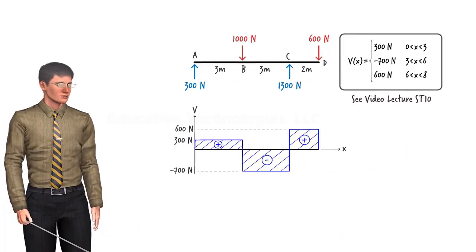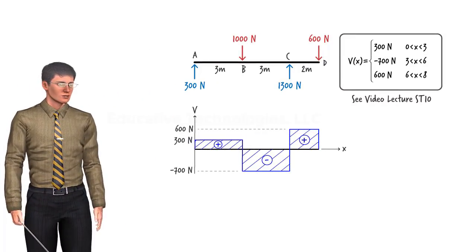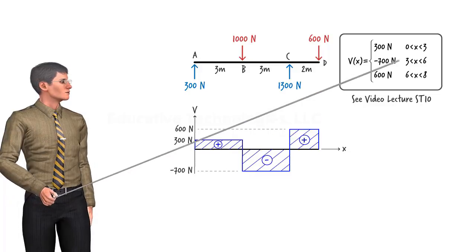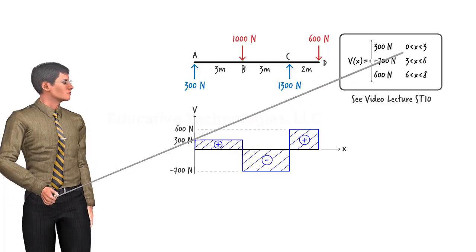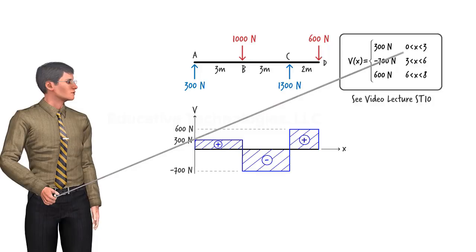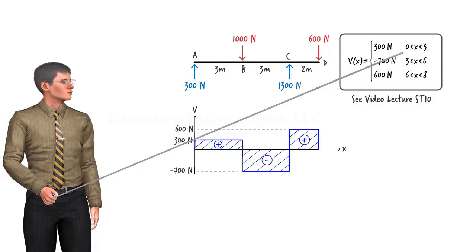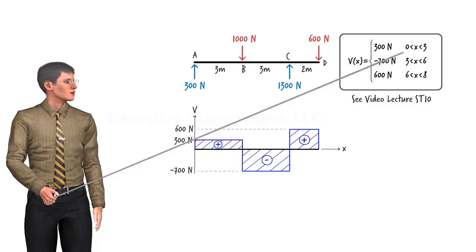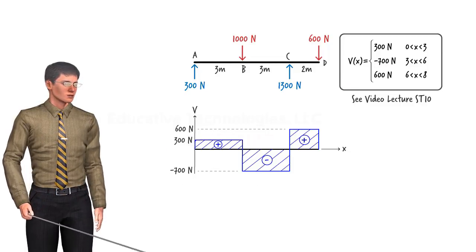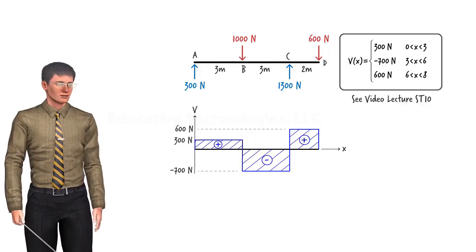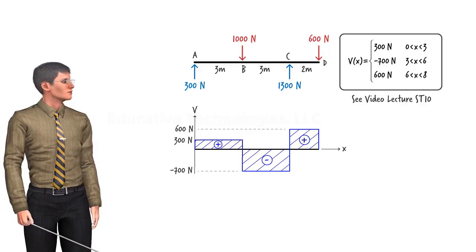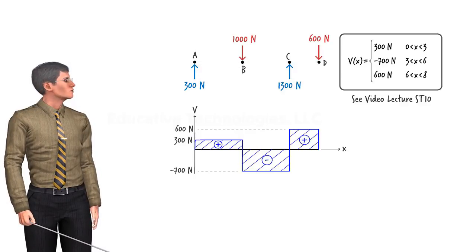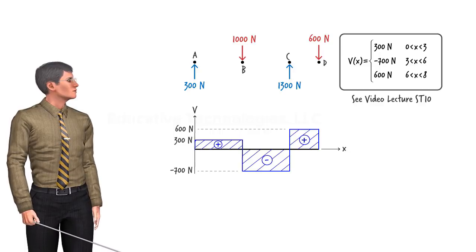Before we start, let's make an important observation. According to these equations, shear is not defined at the points of application of the concentrated loads. The equations give us the shear values within each segment of the beam, but not at its boundaries. Why can't we define shear at the location of a concentrated load? To see why, let's isolate points A, B, C, and D.